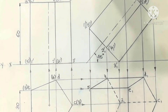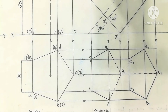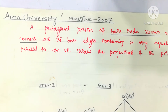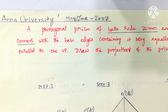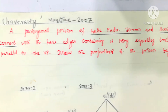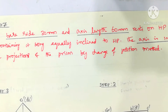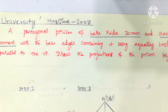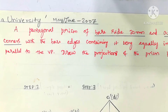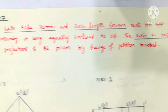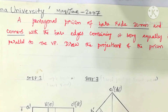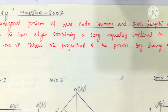This is a small video showing how the drawing is shown in the sheet. Pentagonal prism of base side 20 mm and axis length 60 mm rests on the HP on one of its base corners, with the base edges containing it being equally inclined to the HP. The axis is inclined at 45 degrees to the HP and parallel to the VP. Draw the projections of the prism by the change of position method.